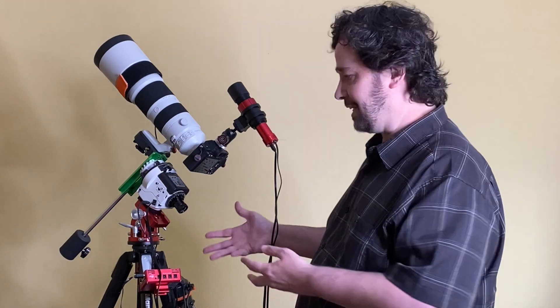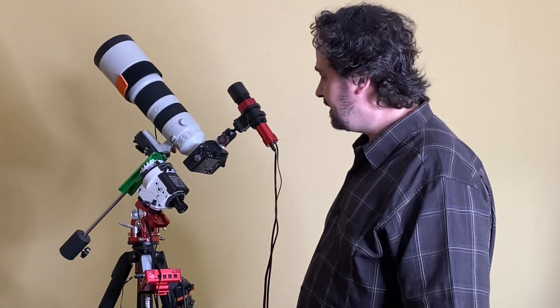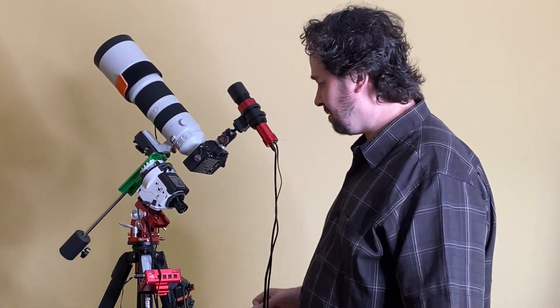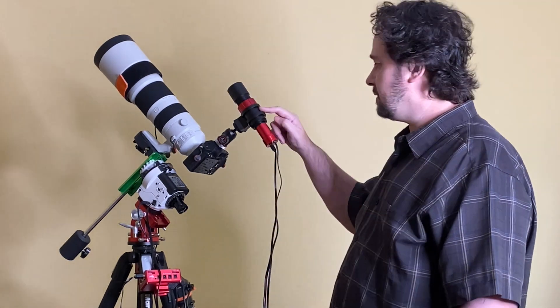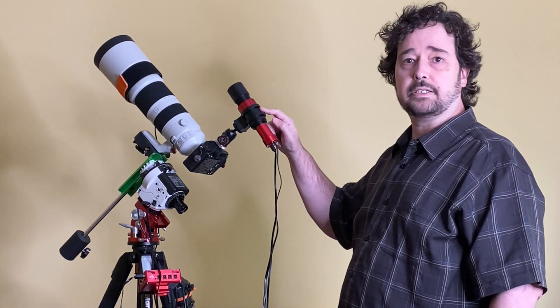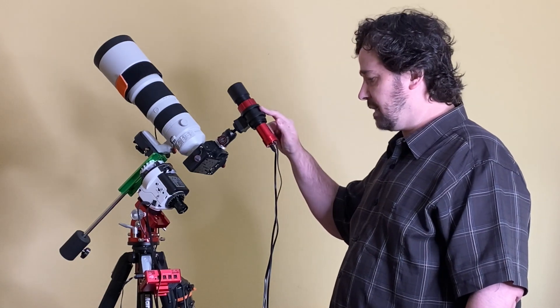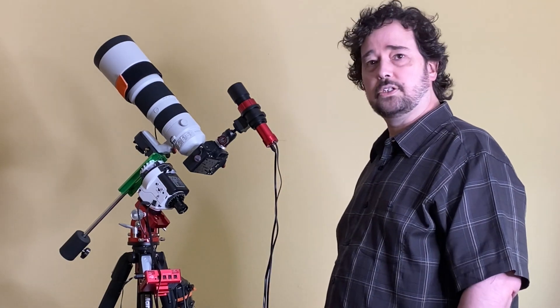There's a bunch of other videos on how auto guiding works, how to get that set up. I'm just trying to go through the progression as we fall down this rabbit hole and have to start expanding this system. So we're still on this little star tracker mount, but now we've added auto guiding.